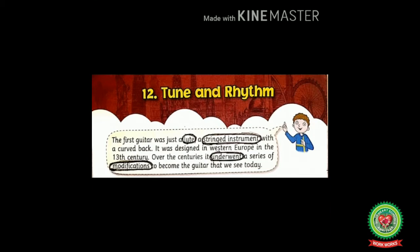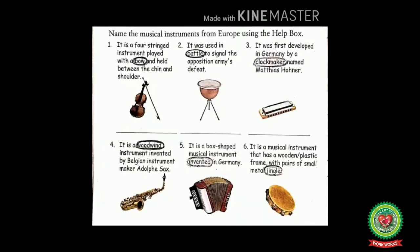First one is lute: a musical instrument that has a body with a round back and a flat top, a long neck, and strings that are played with the fingers. Next one is stringed instrument: an instrument having strings. Next one is underwent: means experiences. Next one is modifications: changes made. Next one is bow: a wooden rod with horse hairs stretched from end to end.